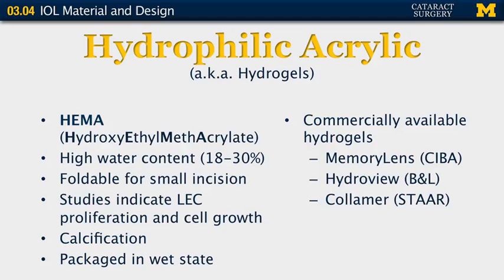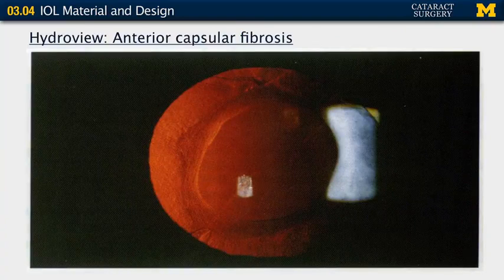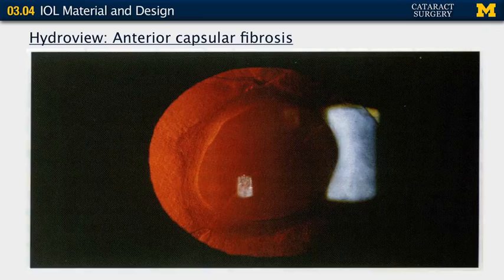Hydrophilic acrylic lenses are also known as hydrogels. They are made of hydroxyethyl methacrylate. They have a high water content and therefore tend to be packaged in the wet state. They are also foldable for small incision use. Studies indicate they have a higher rate of lens epithelial cell proliferation, meaning a higher rate of needing YAG laser capsulotomy later on. Some of these have been known to calcify in vivo in patients, so much so that they need to be explanted and replaced. Common hydrogels include the Memory Lens, HydroView, and Colomer. Here is a slide showing opacification, capsular phimosis, and fibrosis associated with this type of lens.